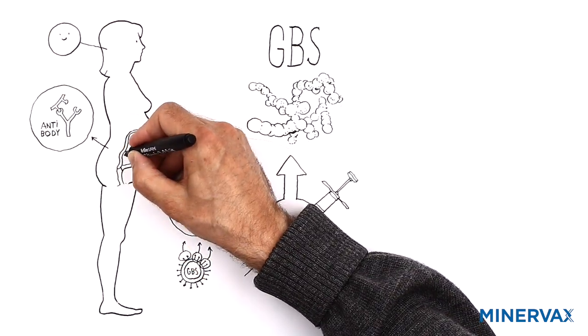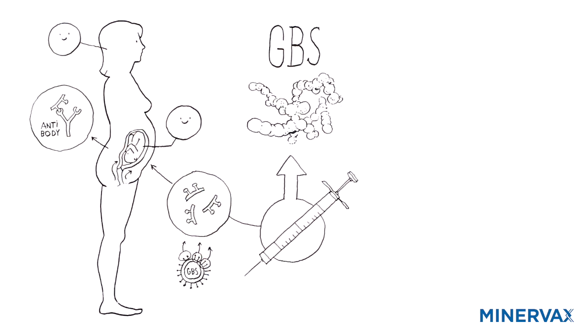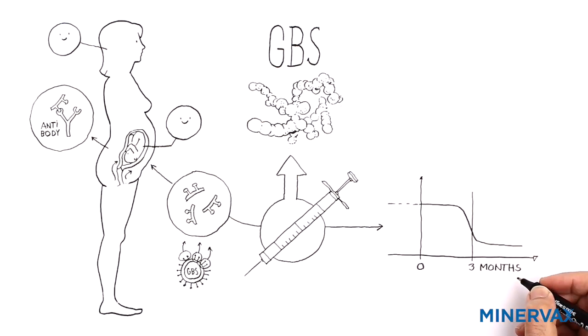but also the unborn child, since the antibodies are passed to the fetus via the placenta. And they'll persist and protect the baby against GBS for up to three months after birth.